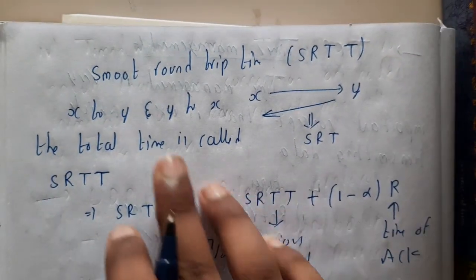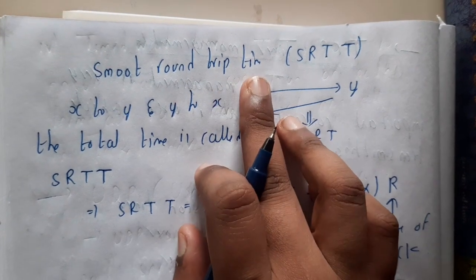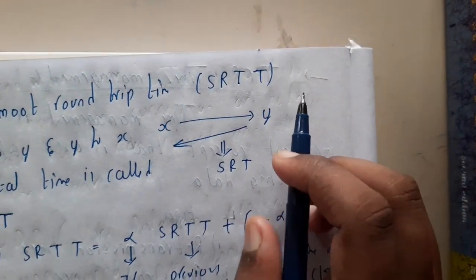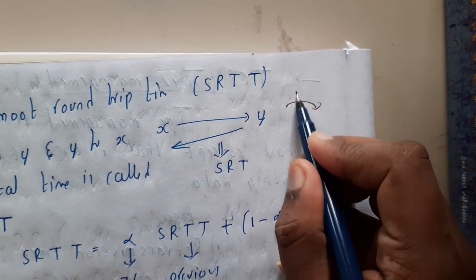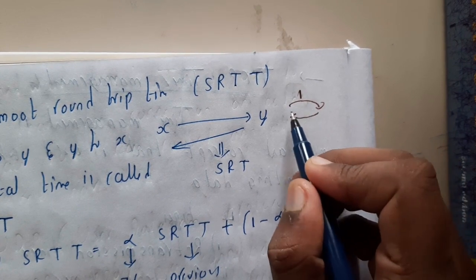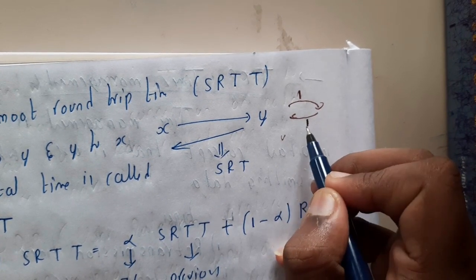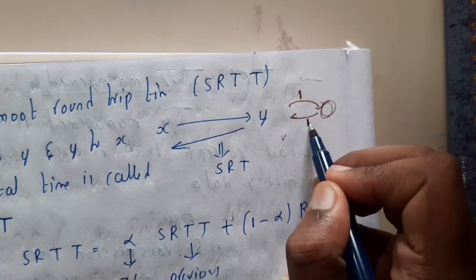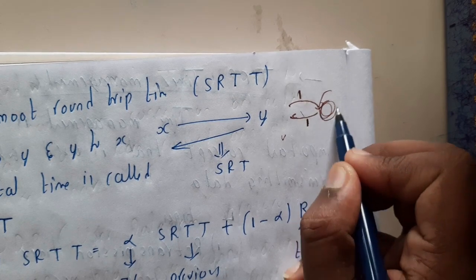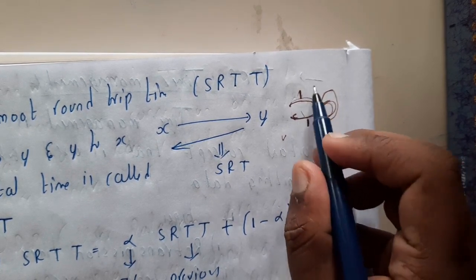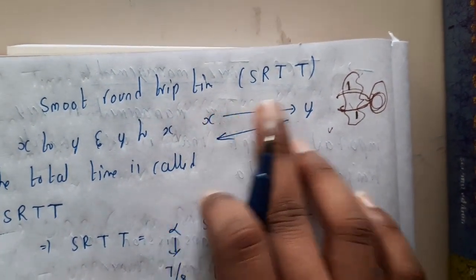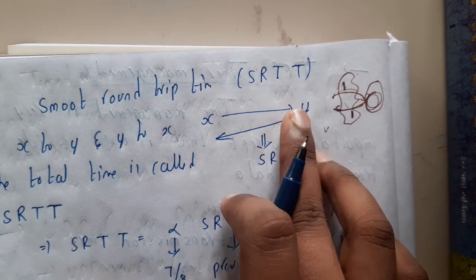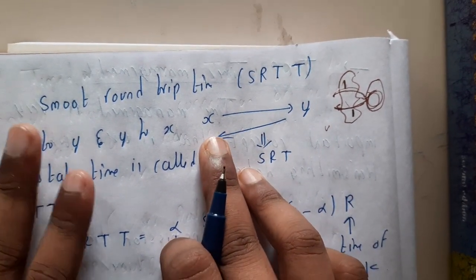The question is: when to retransmit? We use a timer for this. The first formula is Smooth Round Trip Time (SRTT). Think of it like a travel analogy — if traveling to a place takes one hour and returning also takes one hour, the round trip time is two hours. Smooth round trip time assumes everything goes exactly as expected.